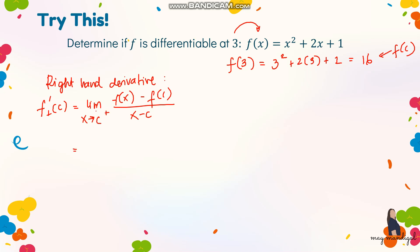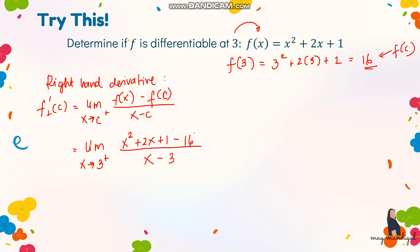Substituting: the limit as x approaches 3 from the right of x squared plus 2x plus 1 minus 16, all over x minus 3. Simplifying the numerator gives x squared plus 2x minus 15, all over x minus 3.